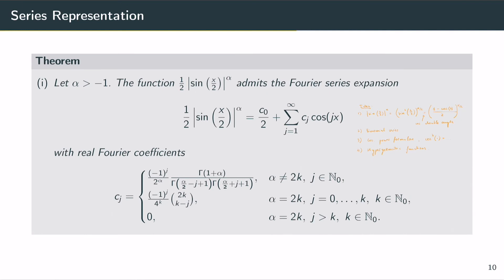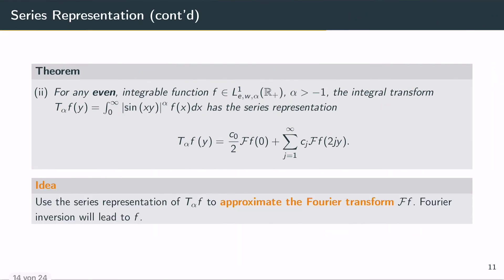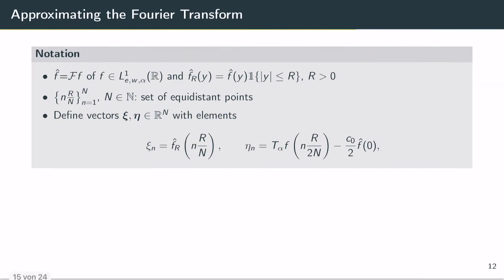With this Fourier series expansion we can derive a series expansion for our alpha sine transform, given in this formula. The goal is to approximate the Fourier transform of f from the alpha sine transform of f. After that, a Fourier inversion will lead to our function f.